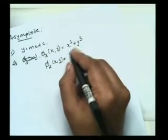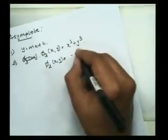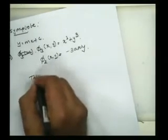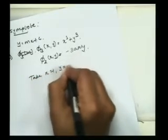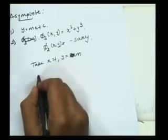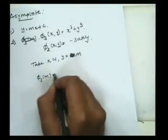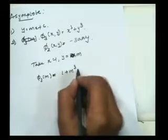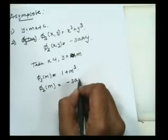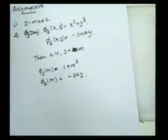The total sum of second degree terms of the equation is -3axy. So phi_3(x,y) = x³ + y³ and phi_2(x,y) = -3axy. To find phi_3(m) and phi_2(m), take x=1 and y=m. Then we get phi_3(m) = 1 + m³ and phi_2(m) = -3am. This gives us phi_n(m) and phi_{n-1}(m).